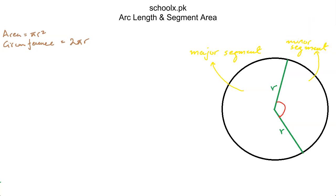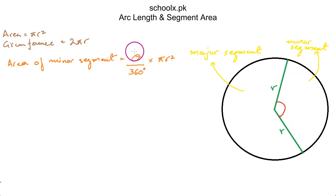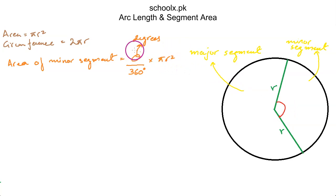In your O-levels, you must have come across the formula for finding the area of the minor segment: area of minor segment = (θ/360°) × πr². This formula is applicable only when θ is in degrees. Here θ is the angle inside the minor segment — substituting the angle and the radius gives the area of that segment only.